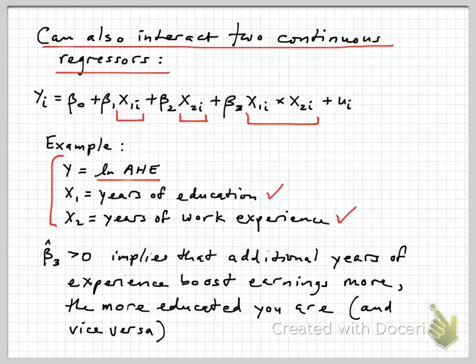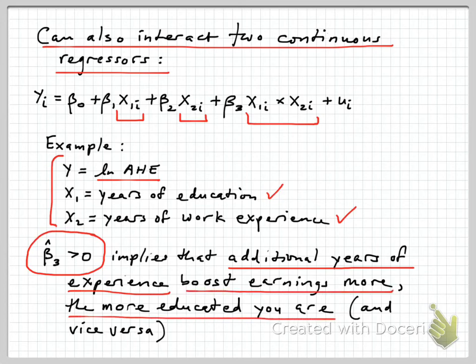In this case, beta 3 tells us something about whether education and work experience reinforce each other or perhaps offset each other's effects on earnings. If we found, which is actually often the case in the real world, that beta 3 hat, our estimate of the interaction effect, was greater than zero, it implies that an additional year of work experience will boost earnings by more the more educated the person is. So if we make education bigger here, and beta 3 is positive, these two things become stronger together, and that means that the return to experience is going to be that much bigger.